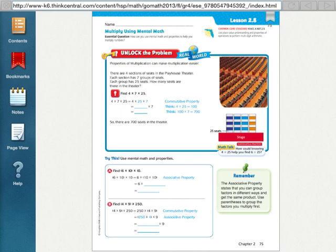This lesson is about multiplying using mental math. Lesson 2.8 covers all the different strategies that you can use to multiply. We have some different properties in math that help you to solve multiplication problems. You need to know what the different properties are and how to use them.